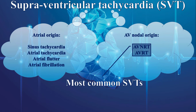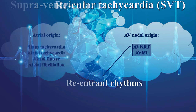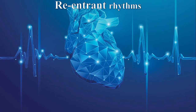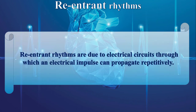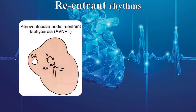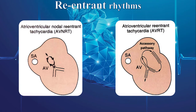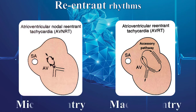As the name reveals, both AVNRT and AVRT are reentrant rhythms. Reentrant rhythms are due to electrical circuits through which an electrical impulse can propagate repetitively. In AVNRT, the reentrant circuit is within or close to the AV node, while AVRT requires an extranodal accessory pathway to bypass the normal conduction system and directly connect the atrium to the ventricle. In other words, AVRT is due to a macro reentrant circuit that involves the accessory pathway and AV node.